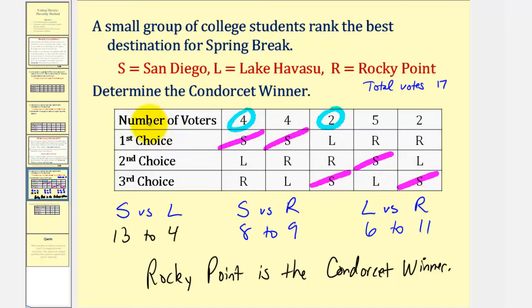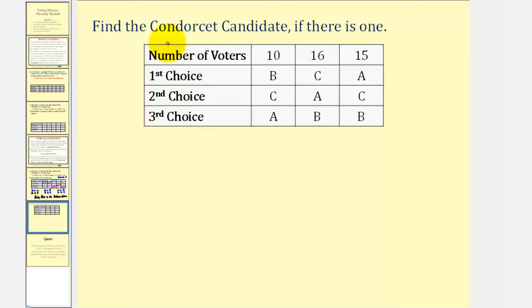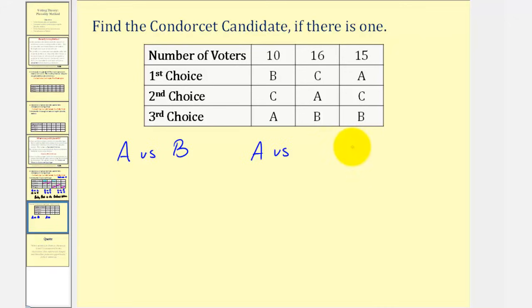So even though San Diego was the plurality winner, under the Condorcet fairness criterion, Rocky Point should be the winner. Let's take a look at one more example — we want to find the Condorcet winner or Condorcet candidate if there is one. The candidates are A, B, and C. We'll do one-to-one comparisons: A versus B, A versus C, and B versus C.